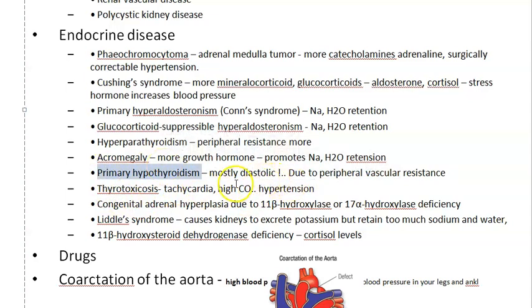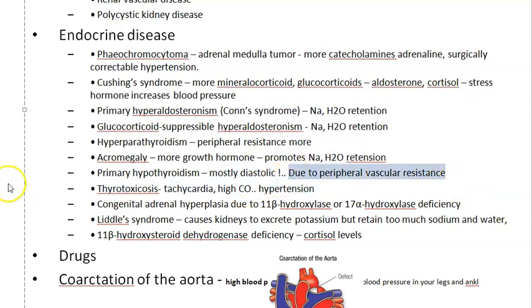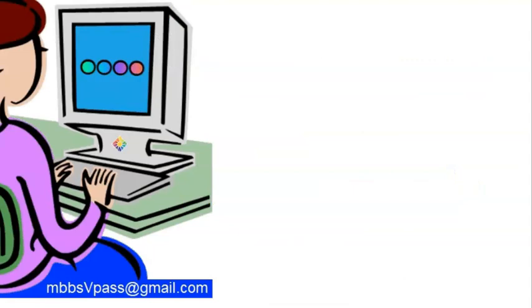In primary hypothyroidism, it is unique — mostly the diastolic blood pressure becomes elevated. This is again because of increased peripheral vascular resistance. So both hypothyroidism and thyrotoxicosis, as well as hyperparathyroidism, are all implicated in causing hypertension.